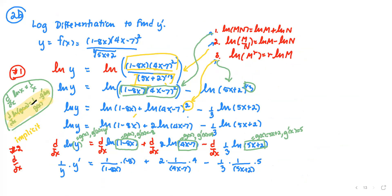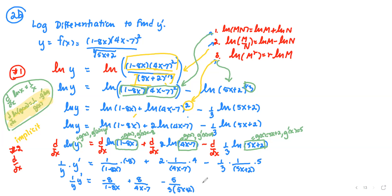Applying the rules and simplifying: the left-hand side gives (1/y) times y prime. On the right: negative 8 times 1 gives negative 8 divided by (1 minus 8x); the second term gives 2 times 4 equals 8 divided by (4x minus 7); the last term gives 5 in the numerator divided by 3 times (5x plus 2). Do not distribute the 3 into the quantity — leave it as a product of the number and the quantity.